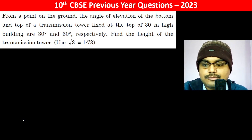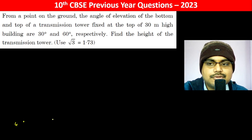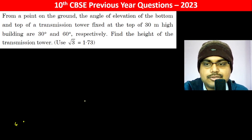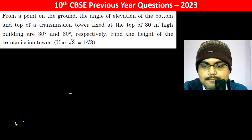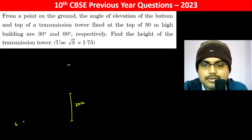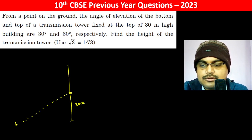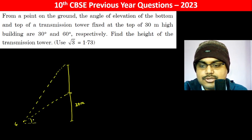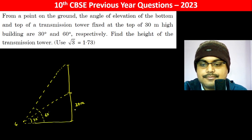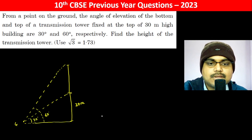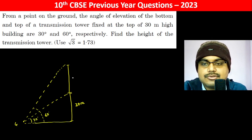From a point on the ground, the angle of elevation of the bottom and top of a transmitter tower fixed at the top of a 30-meter high building are 30 degrees and 60 degrees respectively. This is the building, 30 meters high, and here is the tower. Find the height of the transmission tower.